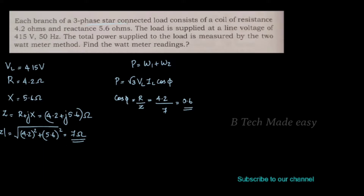For a three-phase star-connected load, this is a star-connected circuit. The phase voltage VPH equals VL divided by √3, and the phase current IPH equals VPH divided by Z, where Z is 4.2 plus j5.6 ohm.